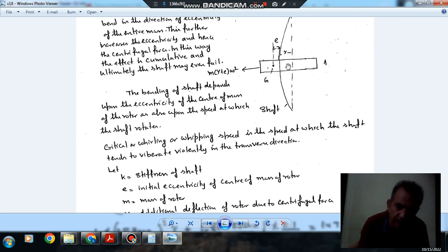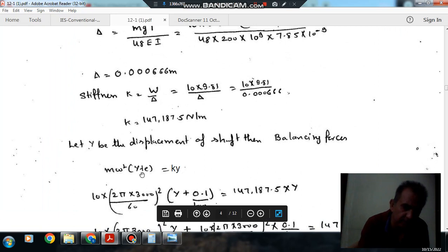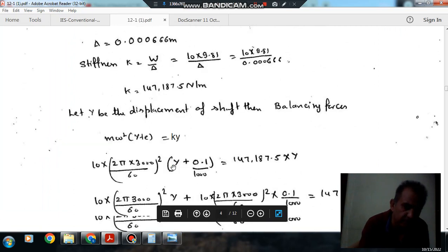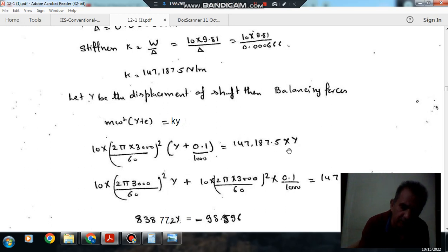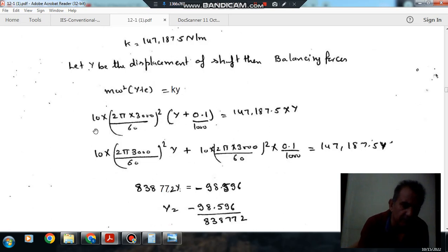K is the stiffness of the shaft and Y is the amplitude. So mω^2(Y+E) = KY. Omega is 2π×3000/60, Y+E is 0.1/1000, K is 147,187.5 N/m, Y is the steady state amplitude, and m is 10 kg.